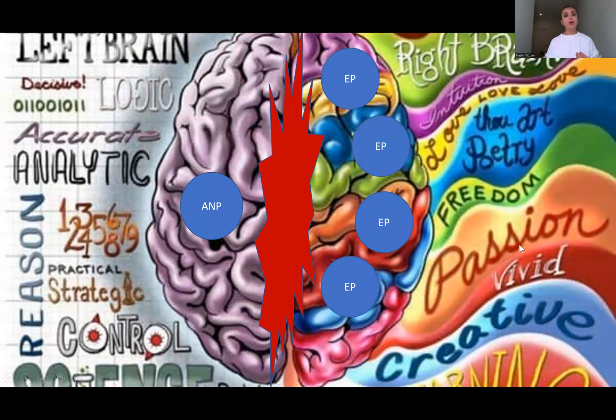The more trauma a person encounters in life, the more emotional parts will develop in the right side of the brain, and the harder it gets for the ANP to move on with life and avoid the EPs.